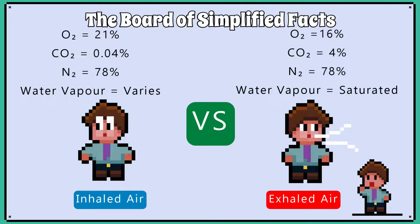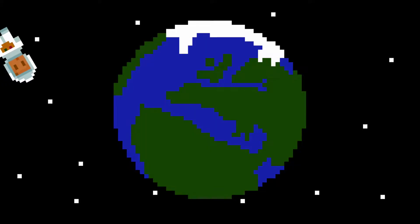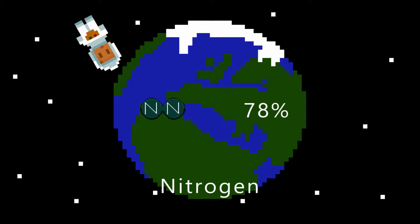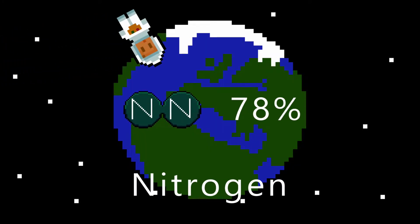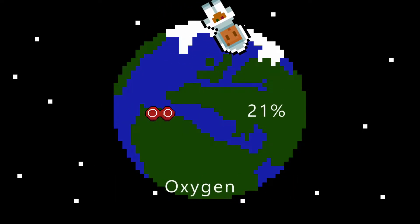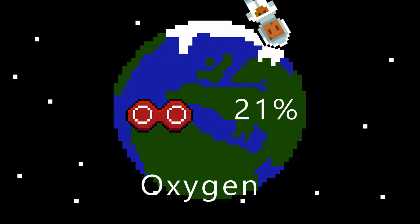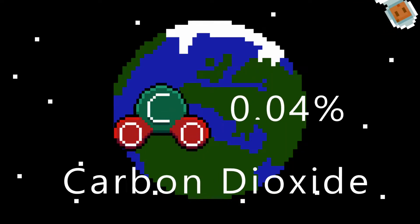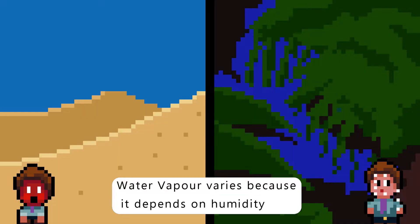You must learn the gas percentage composition of inhaled air versus exhaled air. Inhaled air is just the atmosphere — 78% is nitrogen, 21% is oxygen, and 0.04% is carbon dioxide. The water vapour content varies depending on humidity.